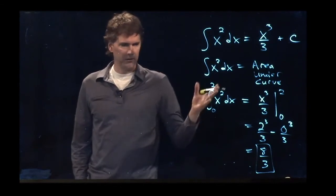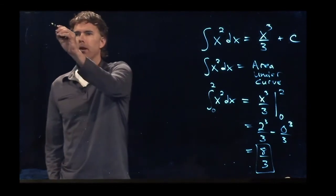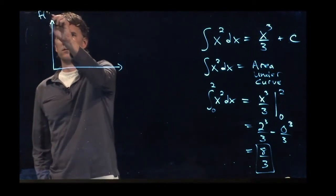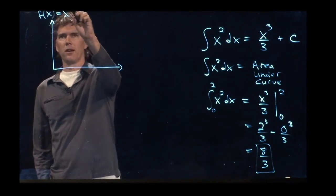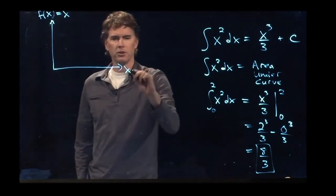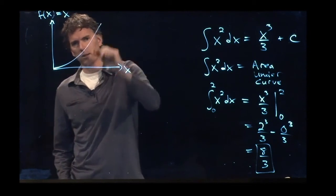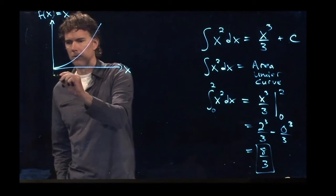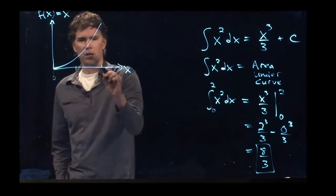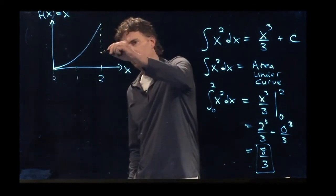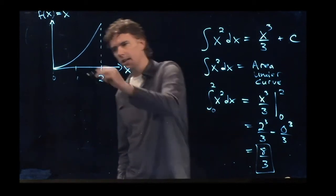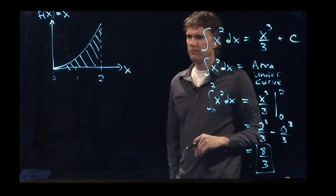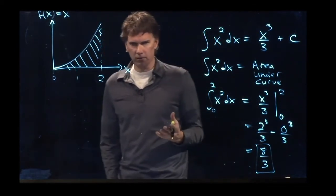But we also said this is the area under the curve. So if I plot out my function, which we said was x squared, as a function of x—you know what x squared looks like? It looks like that. And if I plot this from 0 to 2, what we just calculated is this area right here. If it's a straight line, it's pretty easy to calculate it.